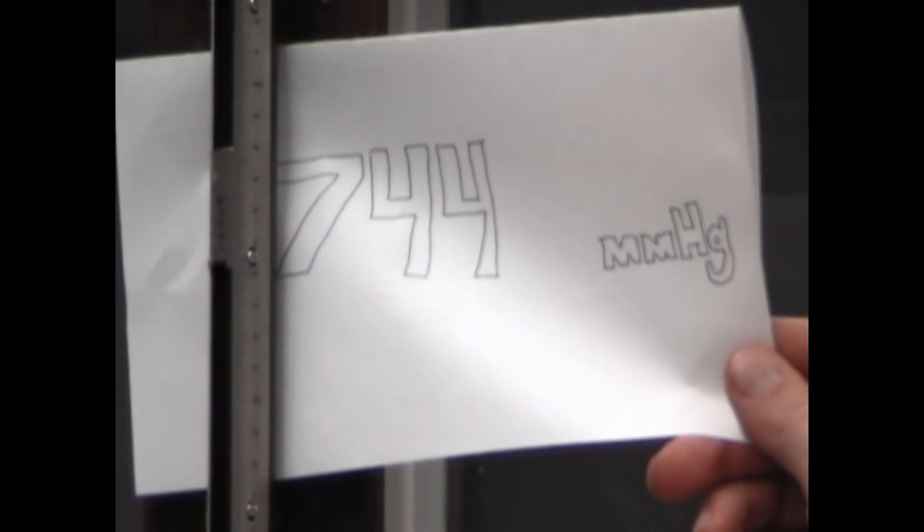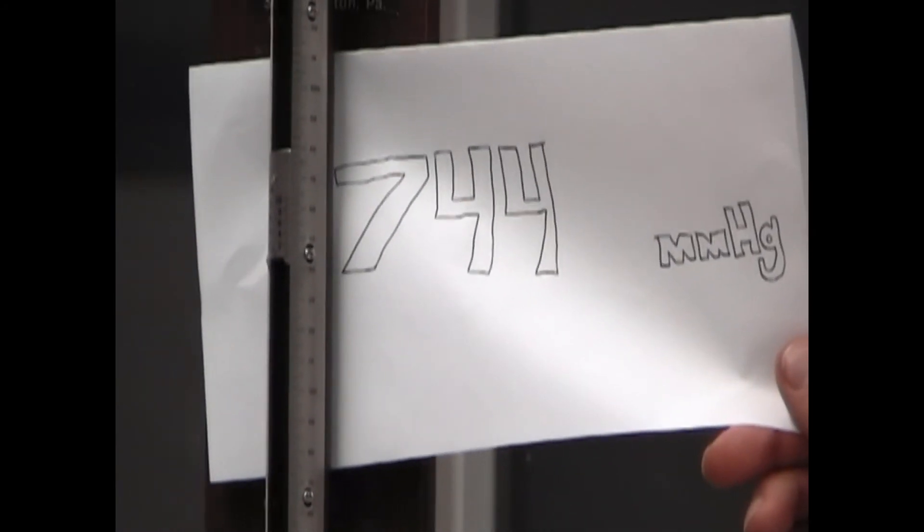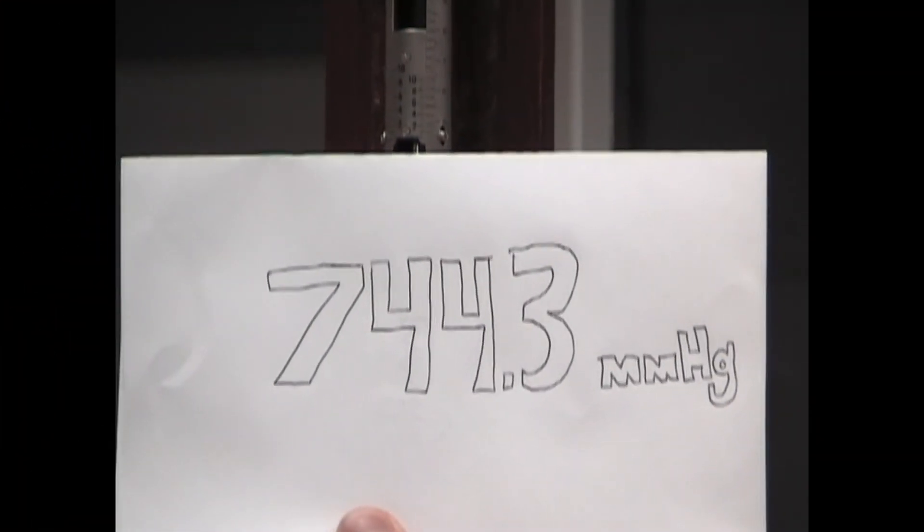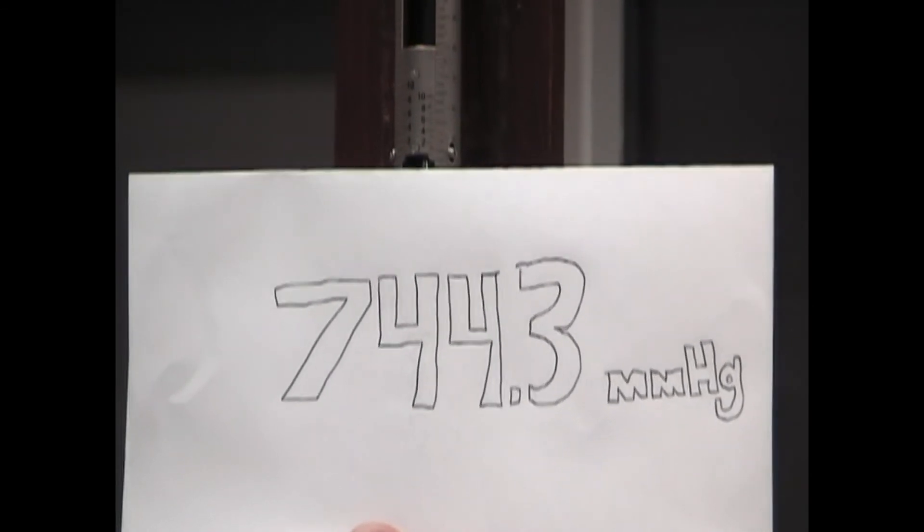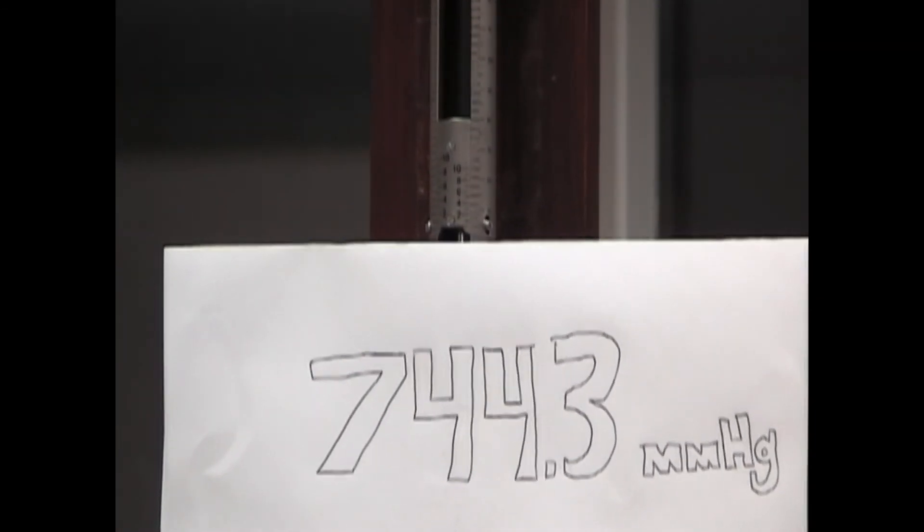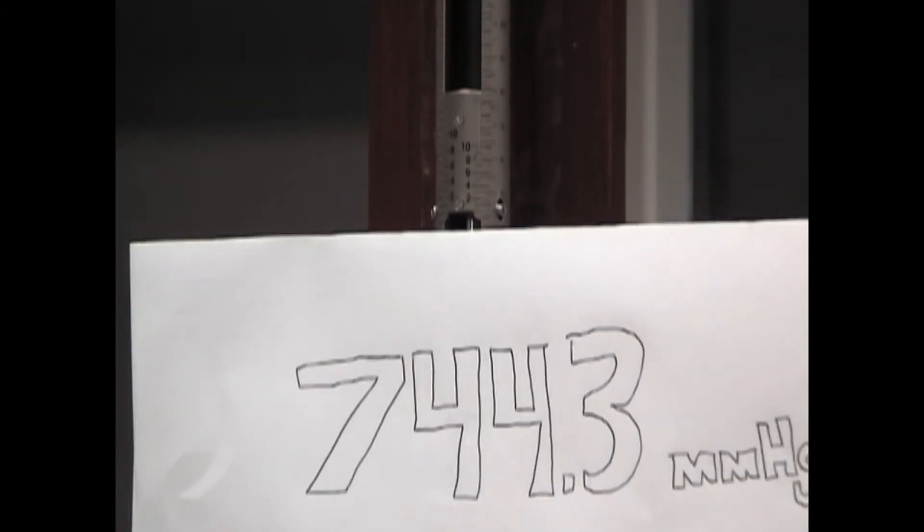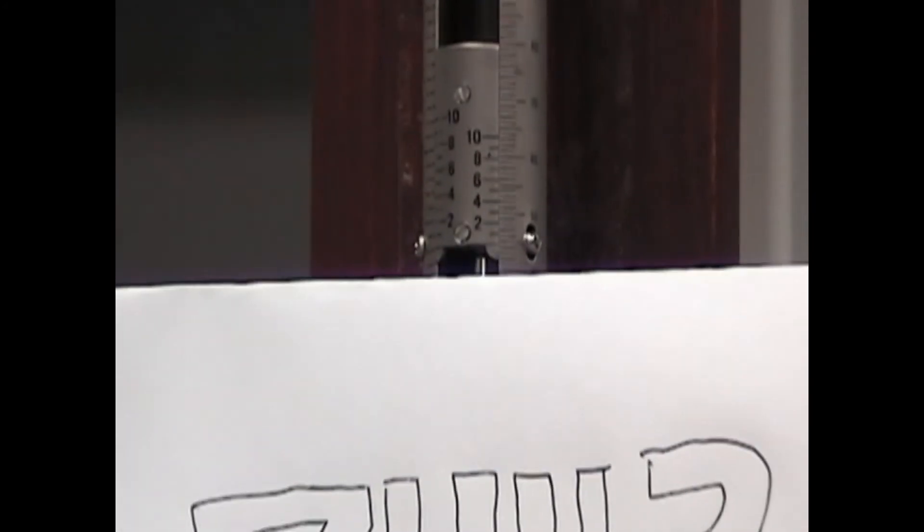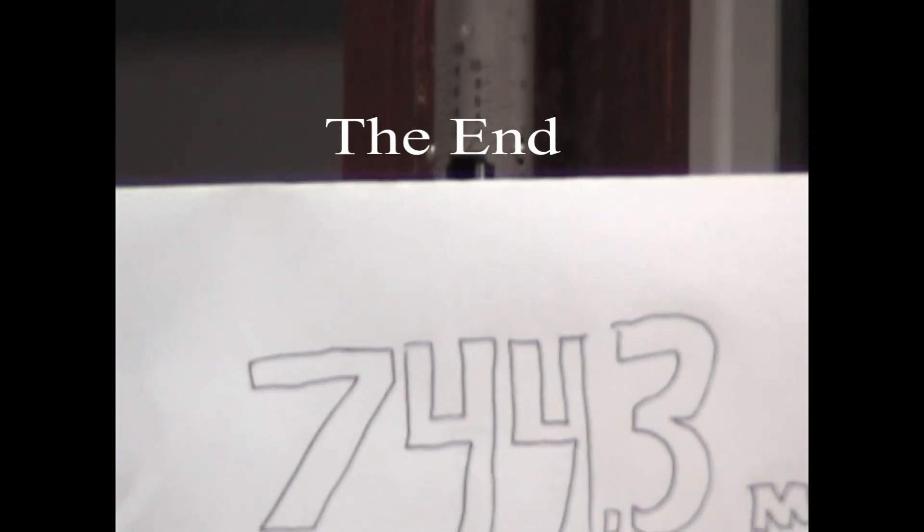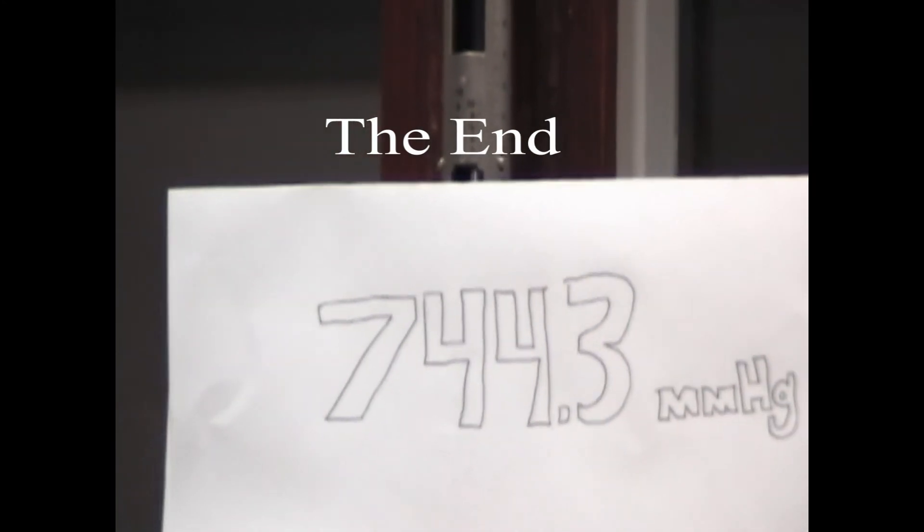The main unit is 744 millimeters. The minor unit is determined by locating the first two horizontal lines that line up exactly. In our video demonstration, it was measured at 0.3 or 3 tenths, making the barometric pressure 744.3 millimeters of mercury.